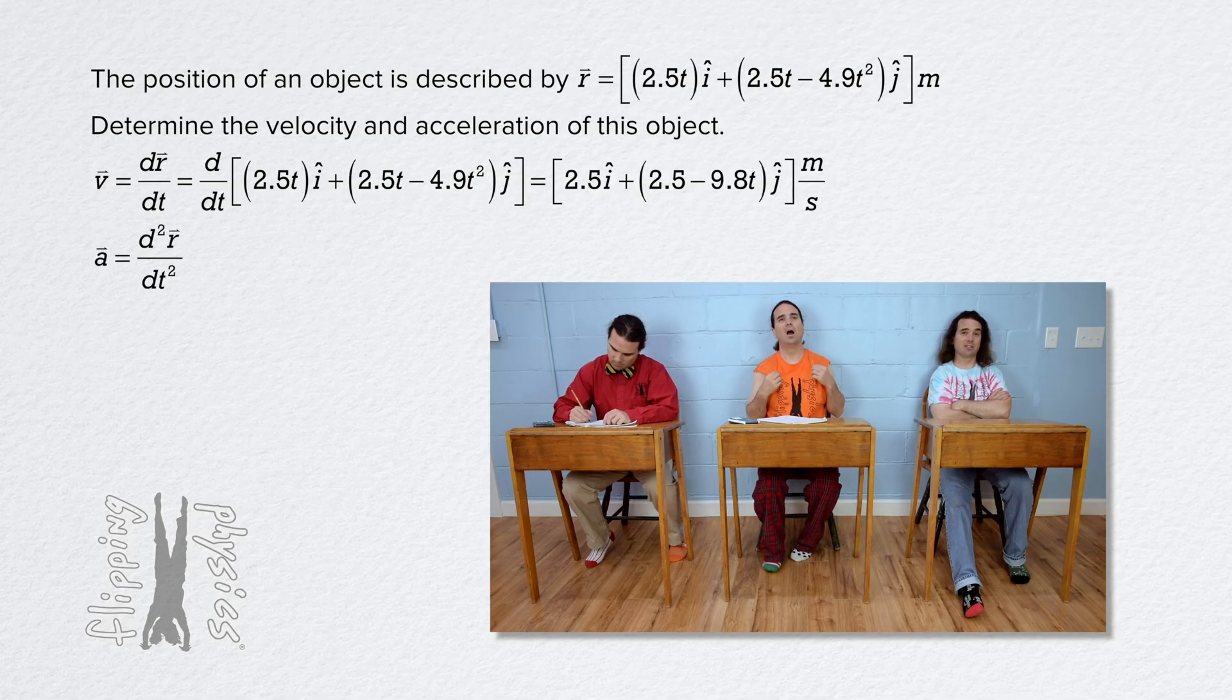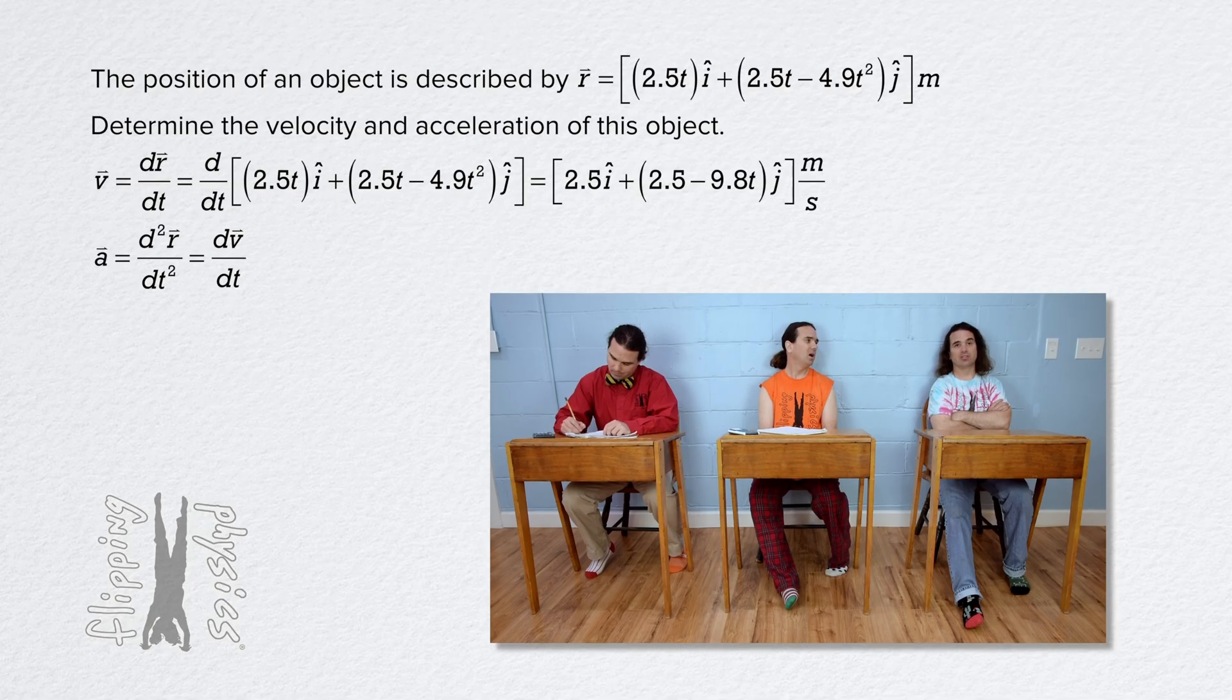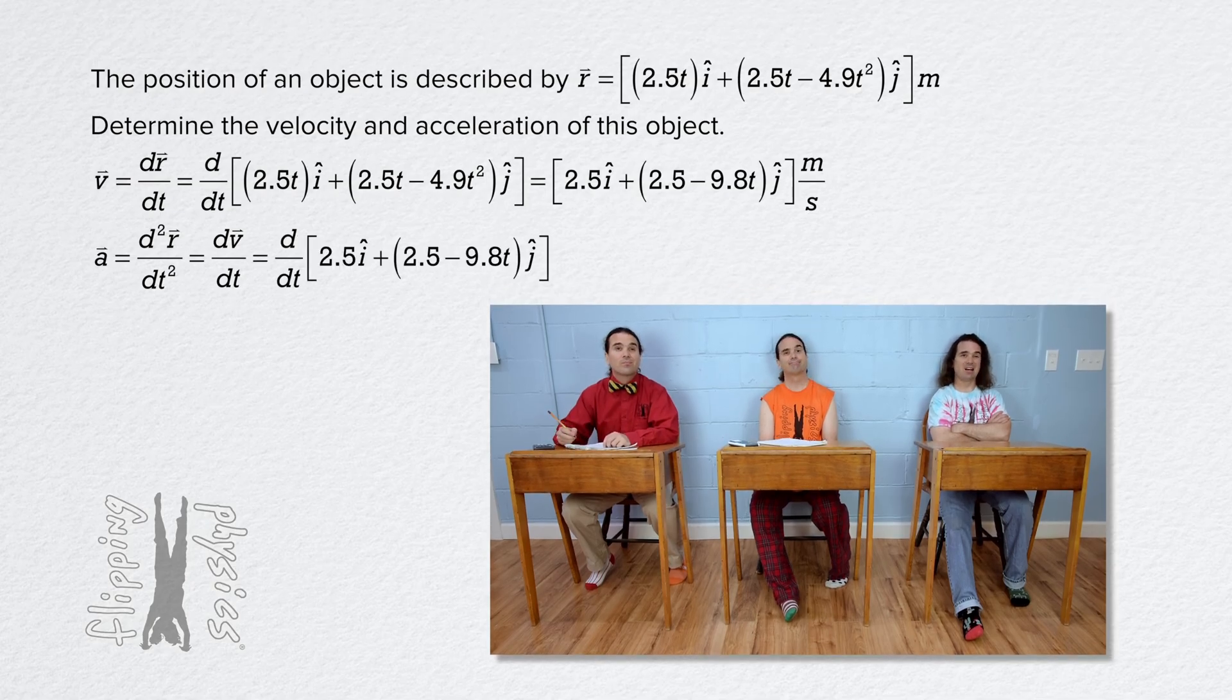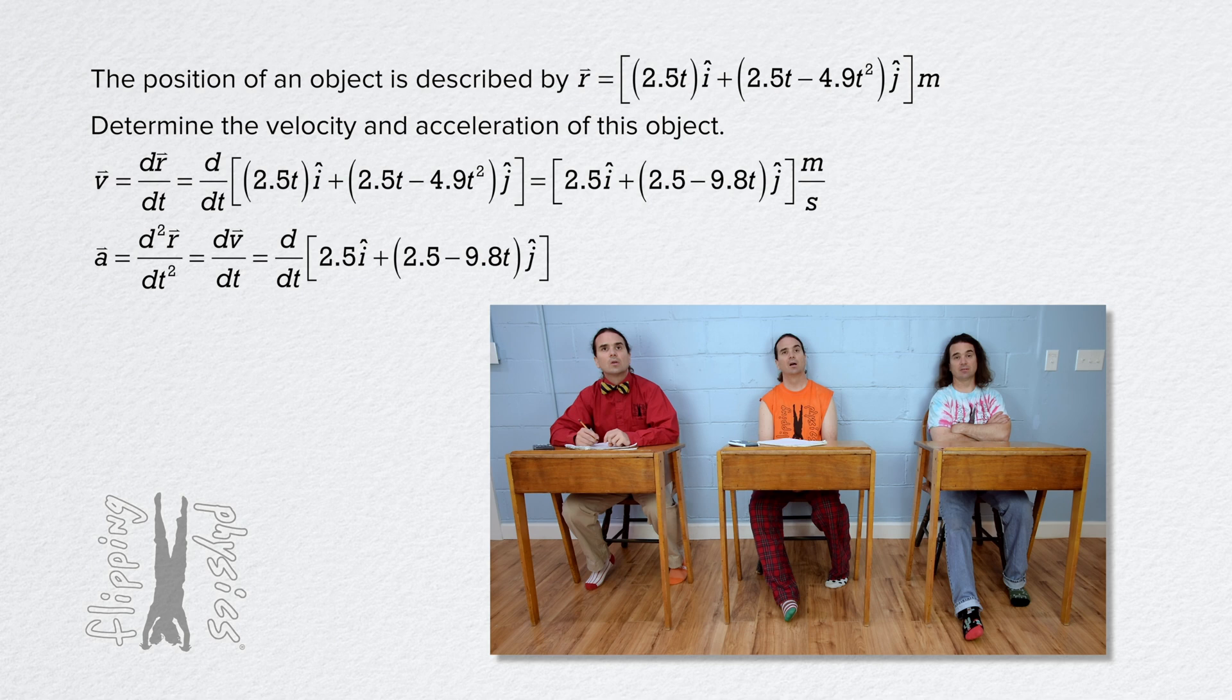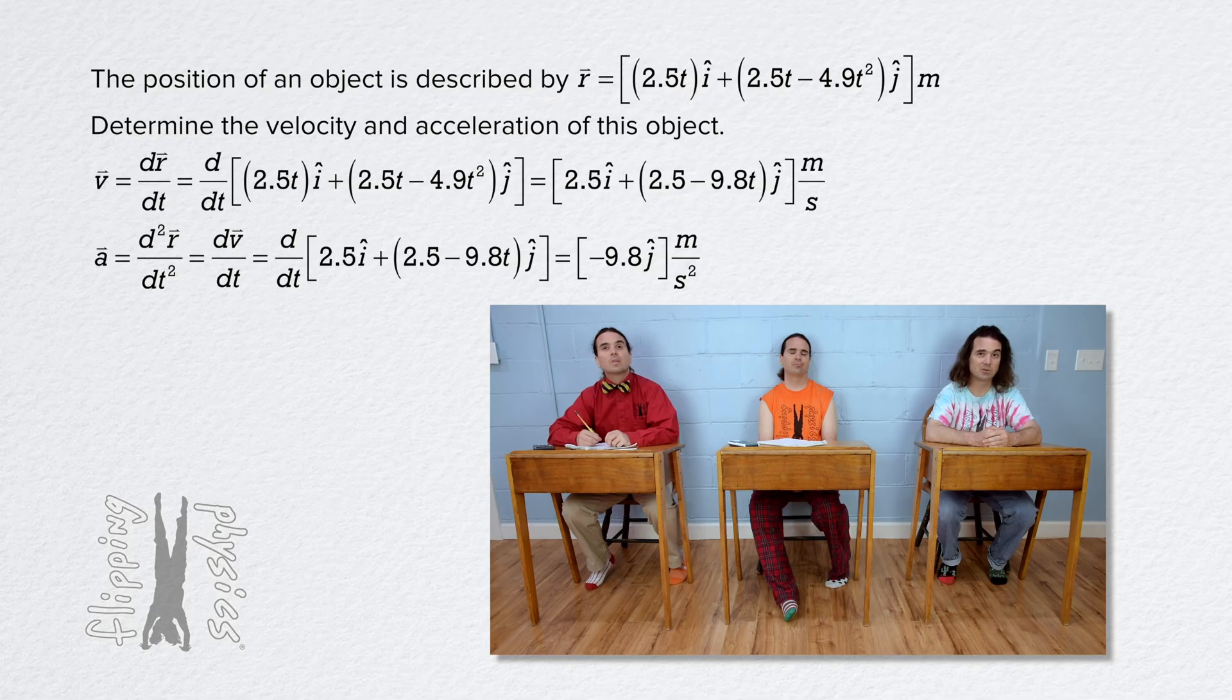Acceleration is the second derivative of position with respect to time, or the derivative of velocity with respect to time. So acceleration equals the derivative of the velocity equation Bobby just found. Well, the derivative of both constants equals zero, so it just ends up being negative 9.8j meters per second squared.